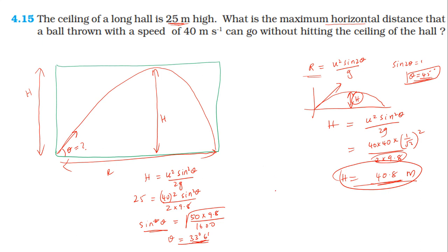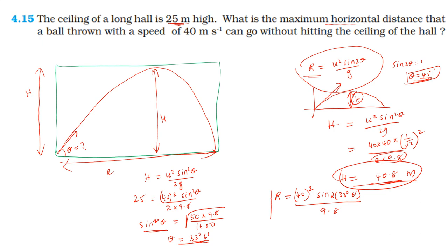Using the maximum range formula R = u² sin2θ / g, with u² = 40² = 1600 and sin2θ corresponding to approximately 33 degrees, the maximum horizontal range without hitting the ceiling is approximately 150.5 meters. The answer is approximately 150.5 meters.